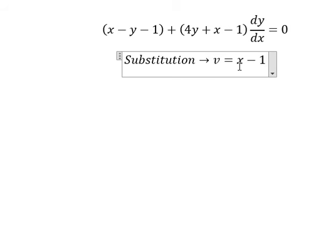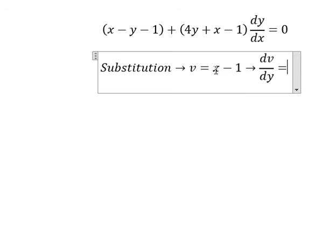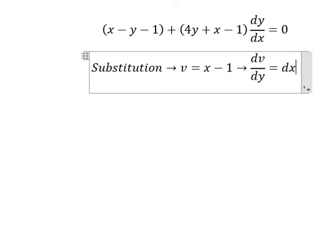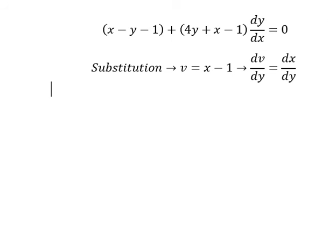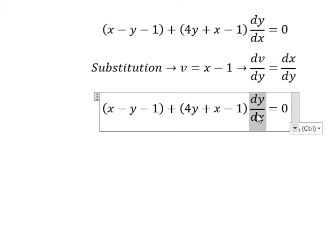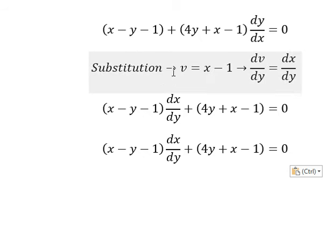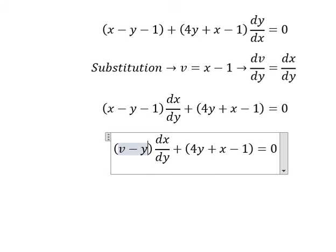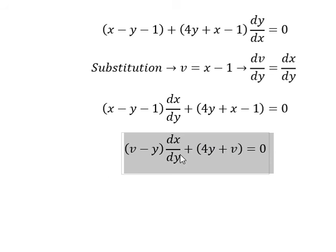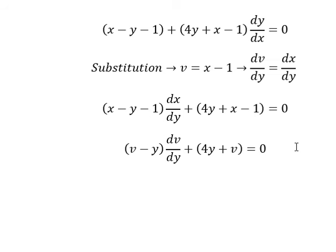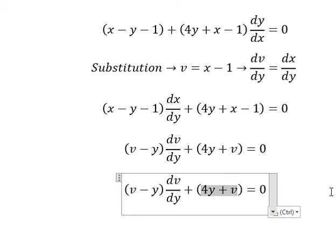We do the first derivative for both sides. We have dv over dy equals the first derivative of s, which is dx over dy. The constant gives zero. We divide both sides by dy over dx to get ds over dy. Then s minus one is replaced by v, and ds over dy is replaced by dv over dy.